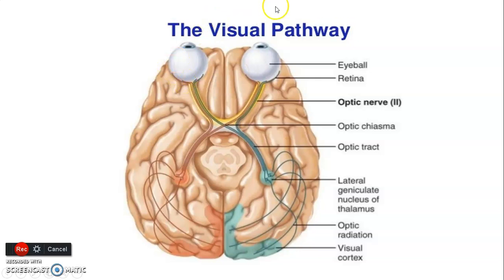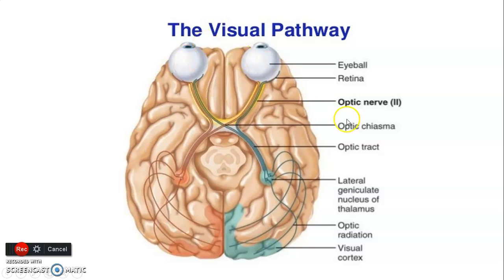Fibers from the nasal part of the visual field for each eye go to the temporal part of the retina and do not decussate. From the nasal visual field to the temporal retina, these fibers continue in the optic tract without crossing. So the optic tract carries fibers from the temporal part of the ipsilateral retina and the nasal part of the contralateral retina — fibers from both eyes but from different parts of the visual field. From the optic tract, they go mainly to the lateral geniculate body, then through optic radiation to the primary visual center.